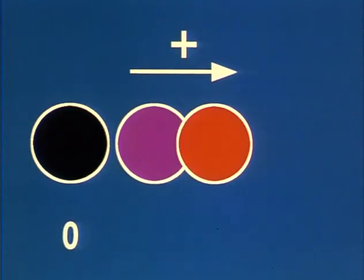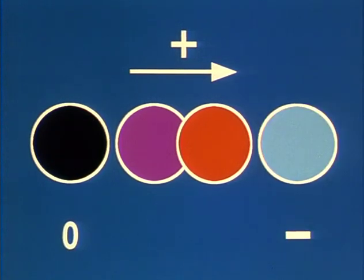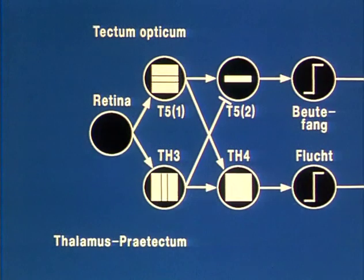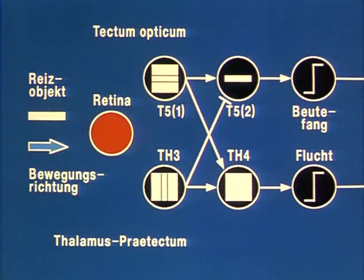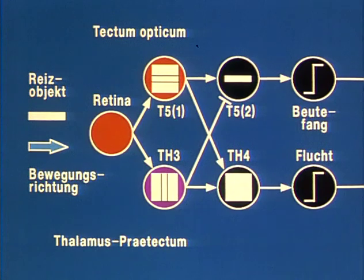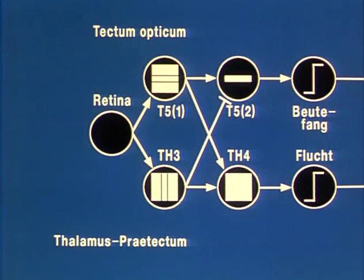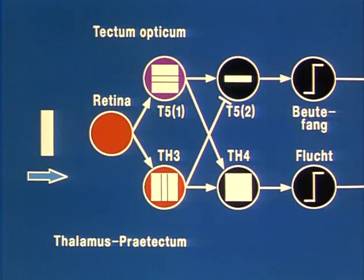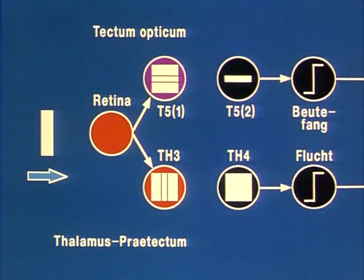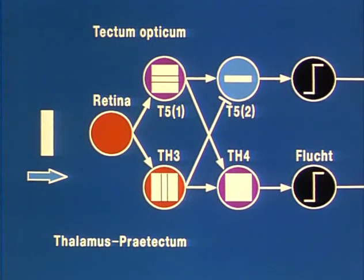In our model, the neuronal systems can display the following states: not activated, weakly, strongly activated, or inhibited. The worm-like moving stripe excites T5-1 neurons strongly and Th3 neurons weakly. This causes no inhibition of T5-2 and only weak excitation of Th4, so that prey-catching is elicited while the threshold for escape is not reached. If a stripe is moved in anti-worm configuration, then Th3 neurons are strongly and T5-1 weakly excited. Consequently, T5-2 is inhibited so that prey-catching cannot be elicited.